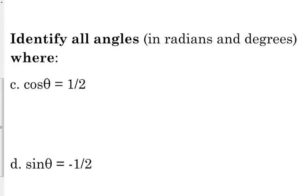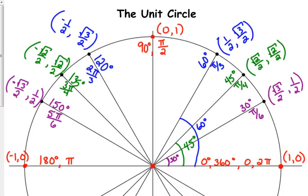Let's look at this. Identify all angles in radians and degrees where the cosine of theta is equal to 1 half. Well, cosine is our x-coordinate. I would kind of write that on my paper. Like, when I see that, I would put an x over it. So, I'm thinking when I look at my unit circle, I'm looking for all the places where my x-coordinate is 1 half.